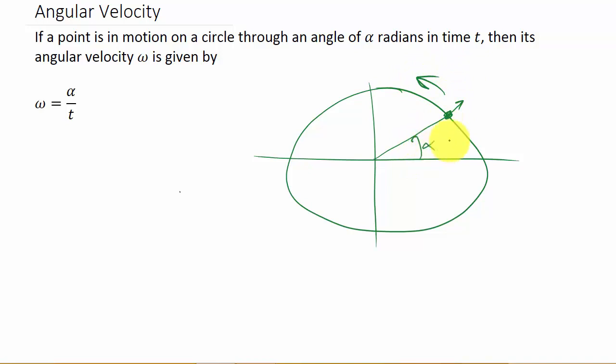Basically what we want to know is as this point is traveling around the circle, we want to know how is that angle changing.